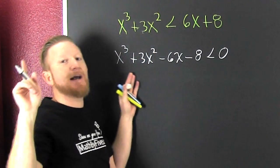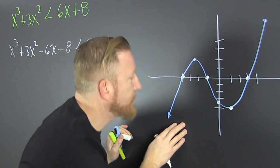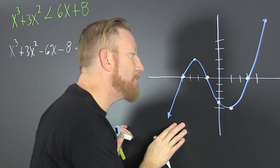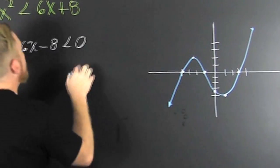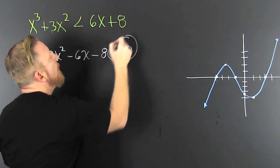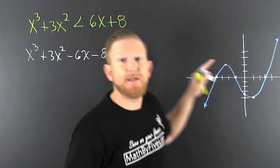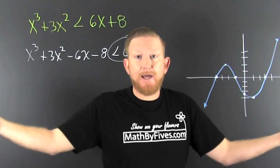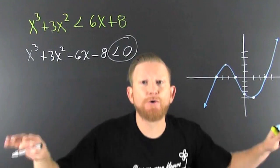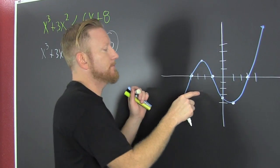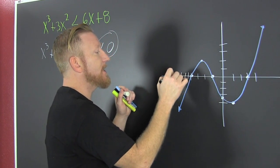I got it all on one side, and I went and graphed that polynomial. That's the graph of that polynomial. What are we looking for? We're looking to see where it is smaller than 0. Smaller than 0 means below the line. For which x values is that polynomial below the line? So then we go and look — it's below the line on these x values.